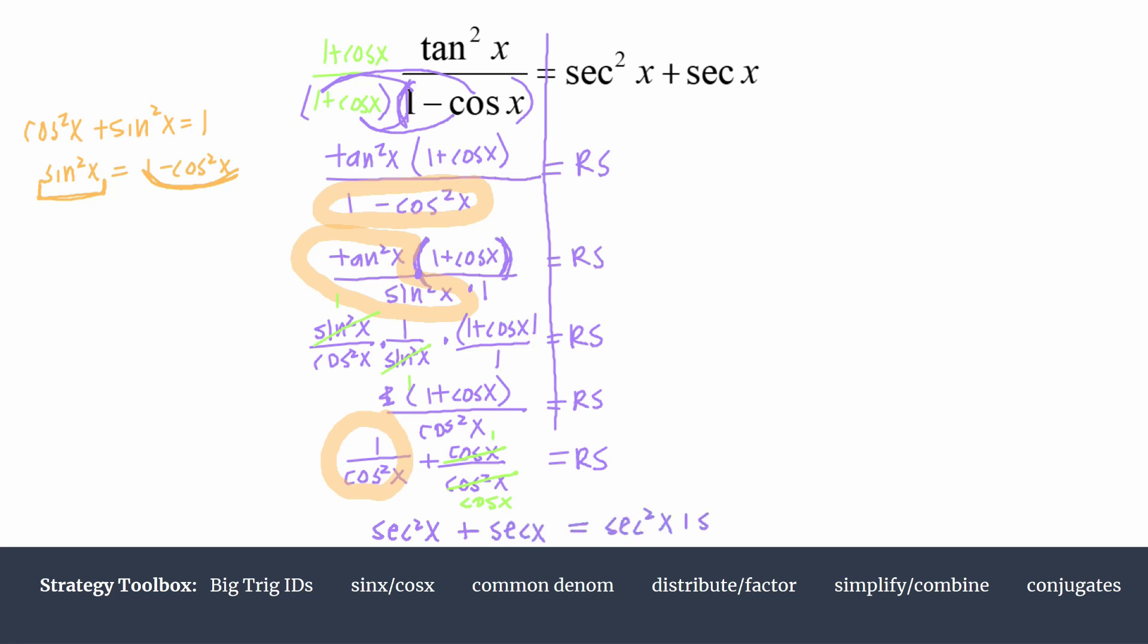So we have secant squared x plus secant x equals our right hand side. We had secant squared x plus secant x. We've proved it.